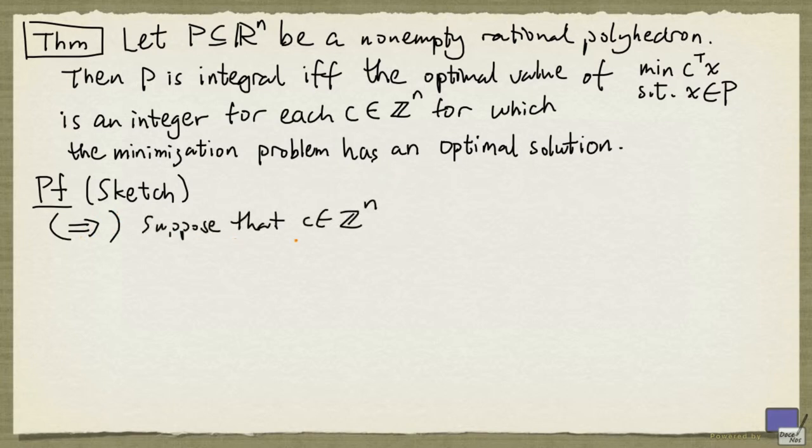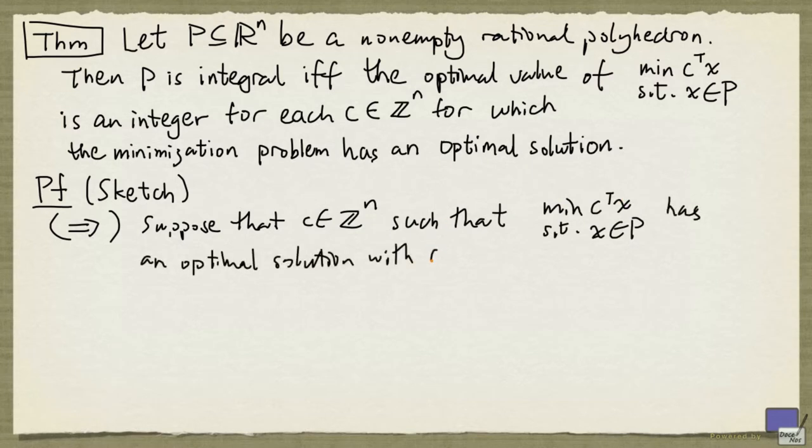Let's first look at this direction. Suppose that we have an n-tuple c with integer entries such that the problem minimizing c transpose x subject to x in p has an optimal solution with optimal value v which is not an integer. And we want to show that p is not integral.